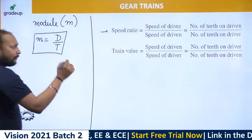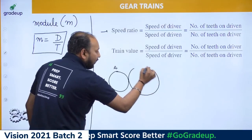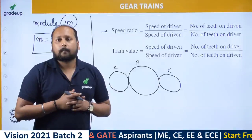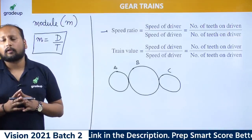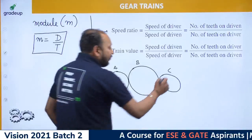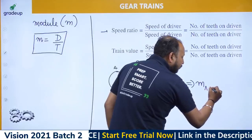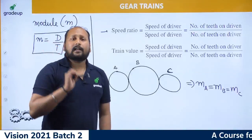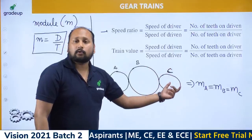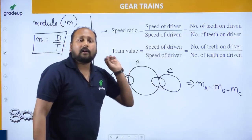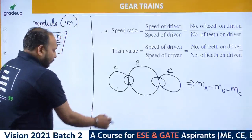If three gears A, B, and C are all in mesh, according to the law of gearing it is mandatory that the module for gear A equals the module for gear B equals the module for gear C. Whenever gears are in mesh, all meshing gears must have the same module — this is a very important concept for solving problems.